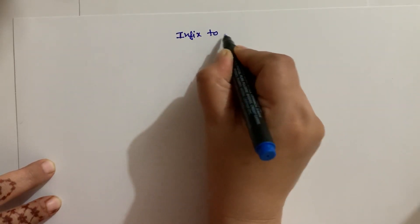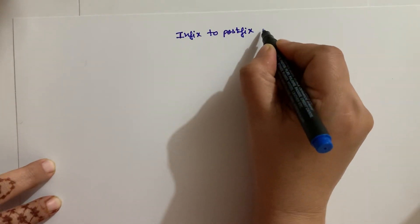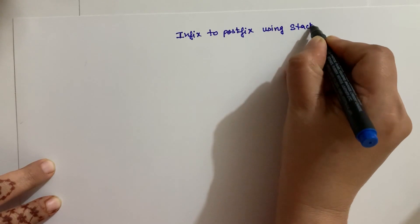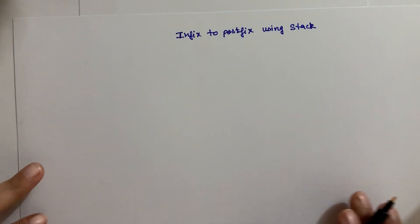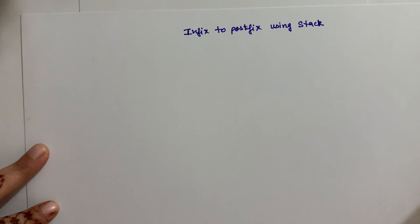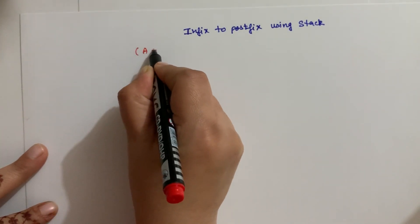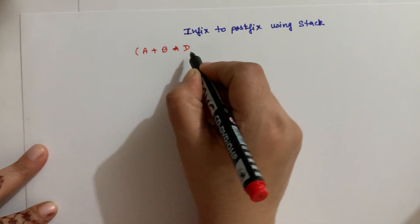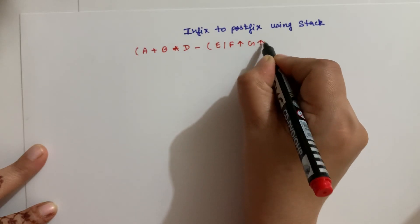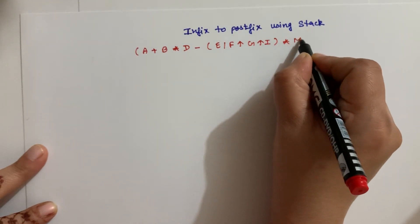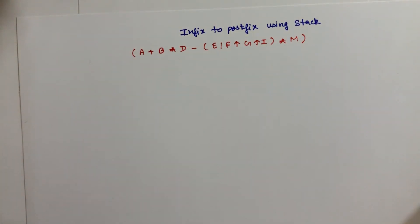Infix to postfix conversion using stack. I think you have already seen infix to prefix in my previous video, so I'm not going to write the whole new rules again. I'll just take an example and explain it. I'm taking the same expression which we have converted using prefix: infix expression A plus B into D minus E divided by F, then raised to the power G raised to the power I, and then into M, and here is the closing bracket.